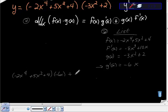And then I'm going to take the second function, which is negative 3x squared plus 2, times the derivative of the first function, which is negative 8x cubed plus 10x.